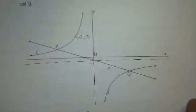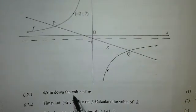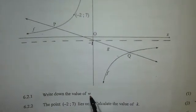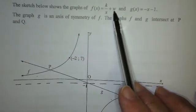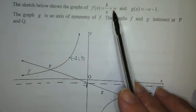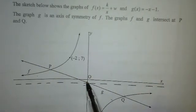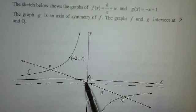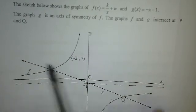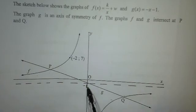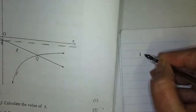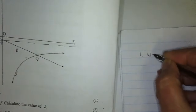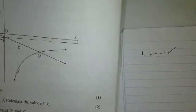The first question says: write down the value of W. Now W, if you go back to your question, is in the place of Q which indicates the asymptote. Because we know the Y-intercept is negative 1 and this line is the line of symmetry, it means W is equal to negative 1. So the answer is W equals negative 1. That's 1 mark.